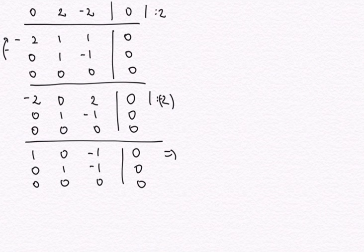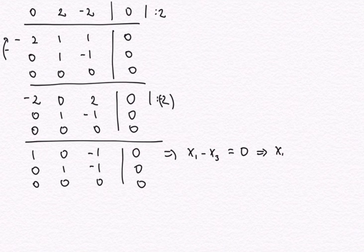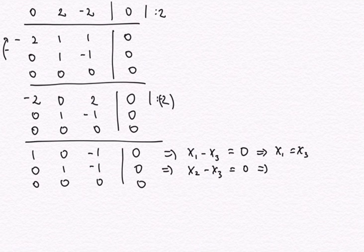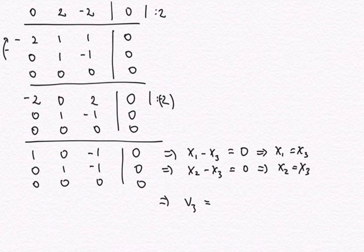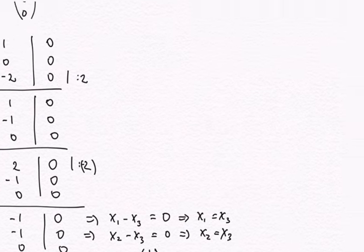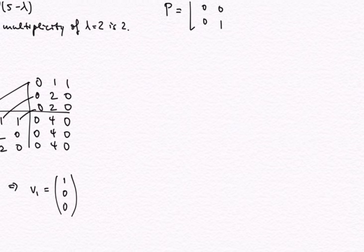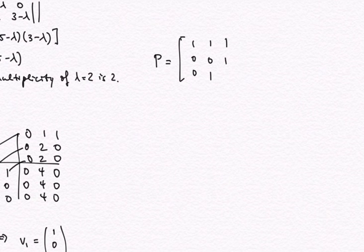This says x1 minus x3 equals 0, or in other words x1 equals x3. And x2 minus x3 equals 0, in other words x2 equals x3. Thus all entries are the same and I get eigenvector v3 as (1, 1, 1). This is a proper eigenvector corresponding to eigenvalue 5.